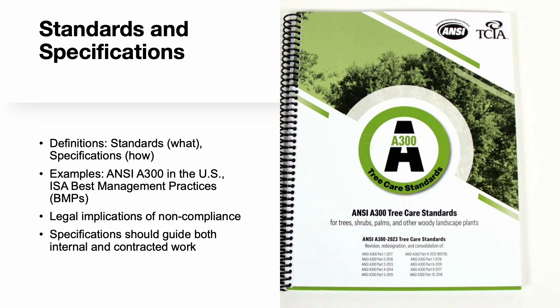Some trees are protected by tree preservation orders — common in the UK and elsewhere — which safeguard trees during development or restrict changes to important trees. Standards like ANSI A300 guide tree care work, and specifications define how tasks should be done. The International Society of Arboriculture provides Best Management Practices (BMPs) that translate standards into practical guidance, covering planting, pruning, risk management, and more, helping ensure consistent and high-quality care of the urban forest.